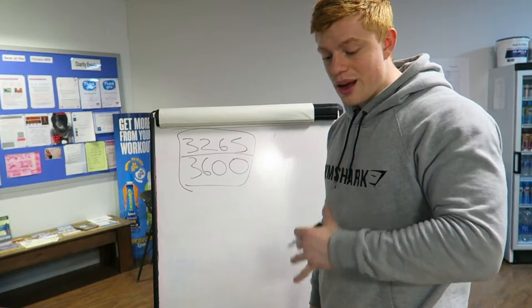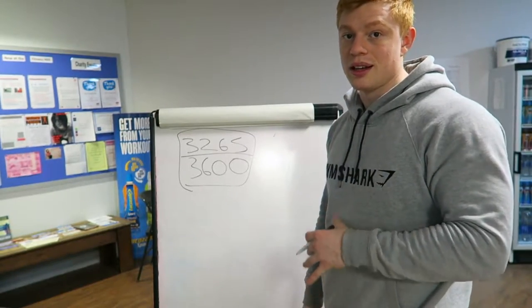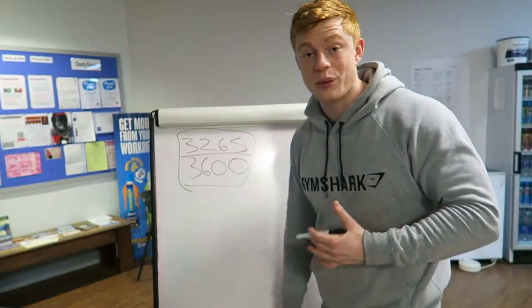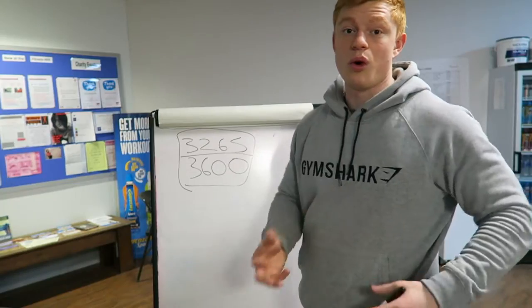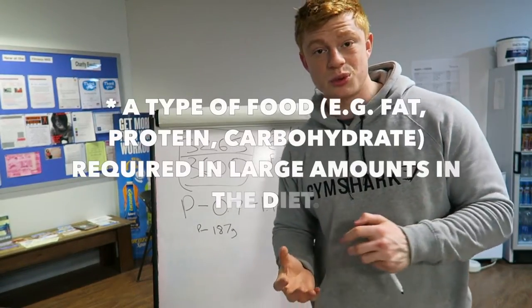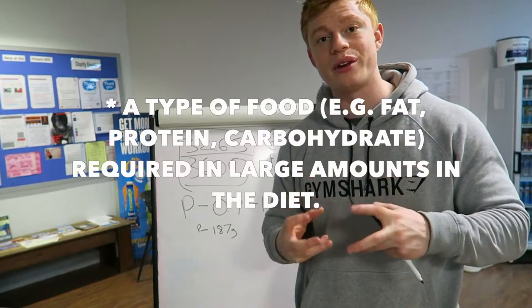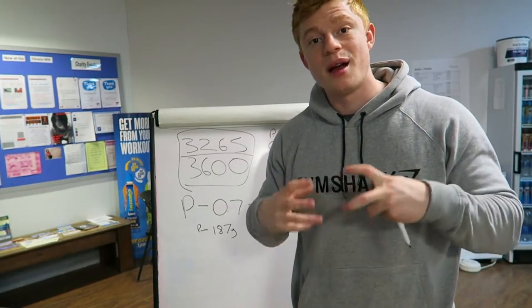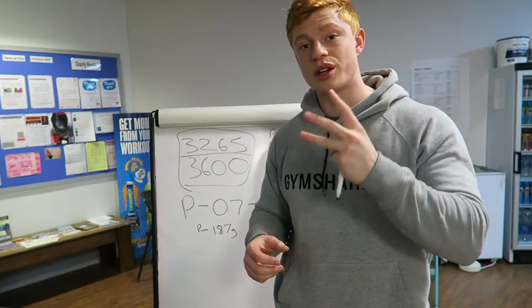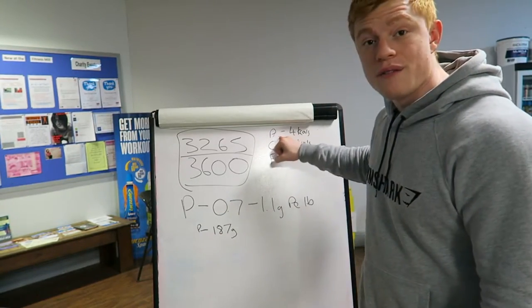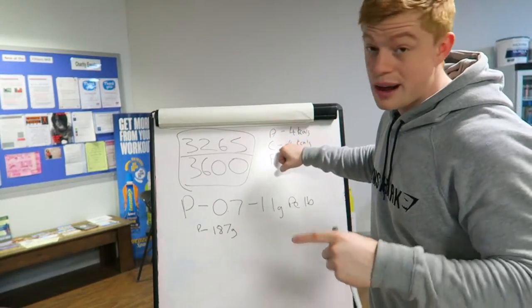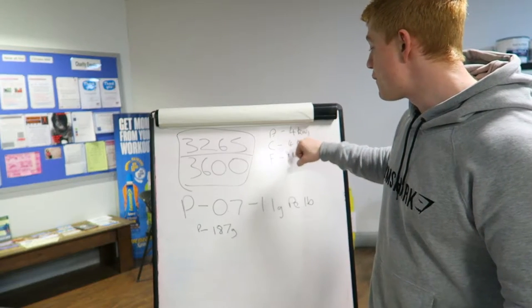Now we need to work out how many macros we need - how much carbohydrates, protein, and fat to eat, and what ratios work best for us. Macronutrients: protein has 4 calories per gram, carbohydrates have 4 calories per gram, and fats have 9 calories per gram.